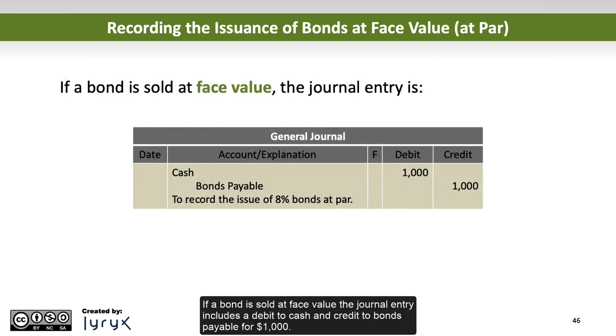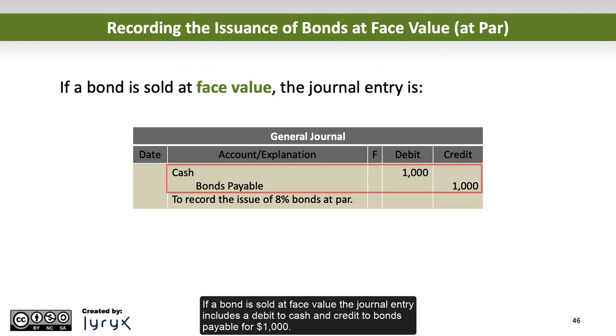If a bond is sold at face value, the journal entry includes a debit to cash and a credit to bonds payable for $1,000.